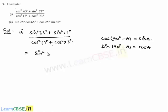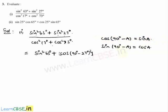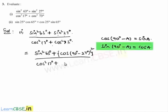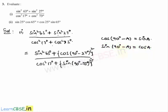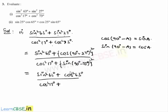Let sin square 63 degrees remain as it is. Sin 27 degrees can be written as cos(90 - 27) degrees whole square, which equals cos square 63 degrees. In the denominator, cos square 17 degrees remains as it is, and cos 73 degrees whole square is written as sin(90 - 73) degrees whole square, which equals sin square 17 degrees.